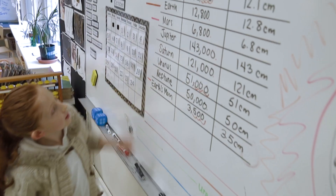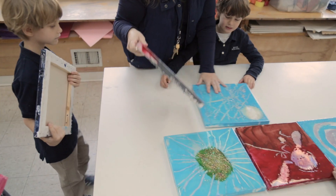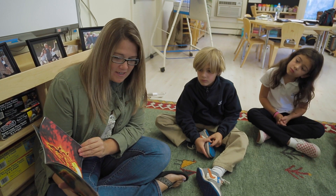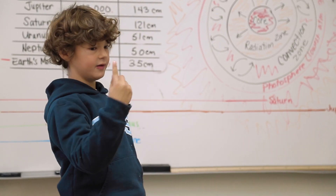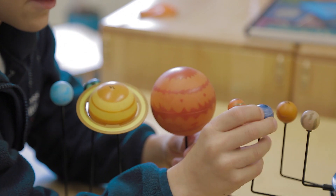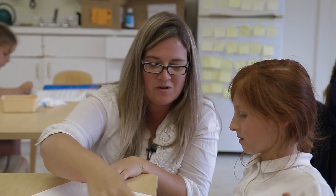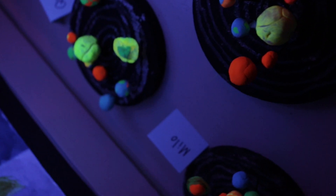The unit integrates math, science, art, and cultural history for an interdisciplinary approach to understanding the universe, the solar system, and systems theory. When math, cultural history, science, and art all come together, it's integrated.